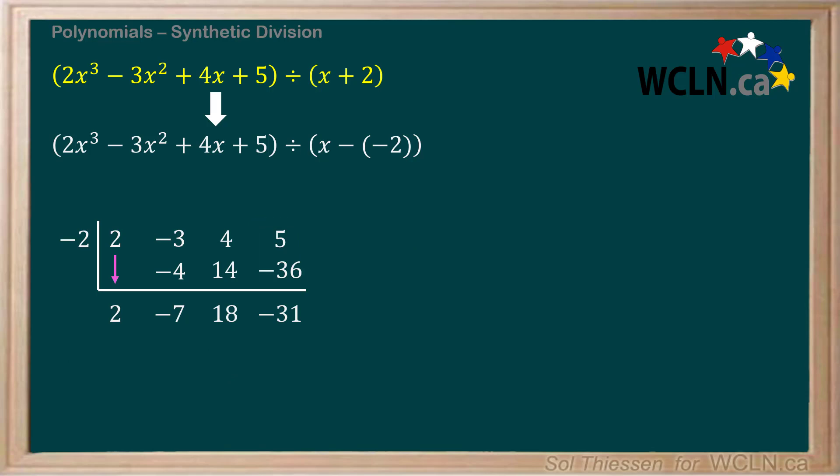We just have to interpret our result, which is what we have underneath the box. I find it easiest to start with the last number on the right, in this case the negative 31. This last number is always the remainder from the division.